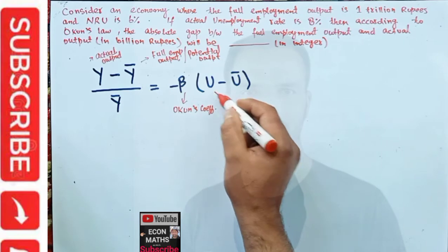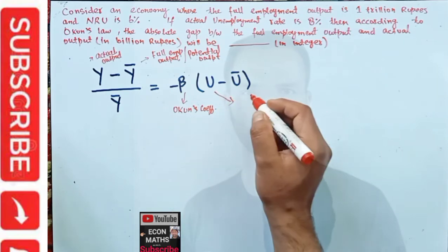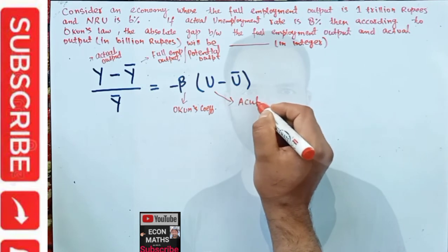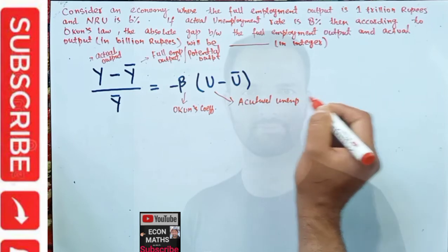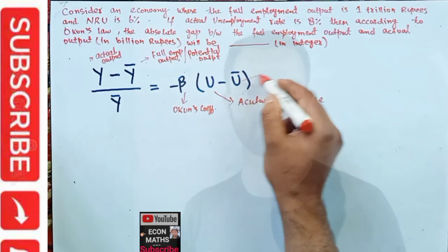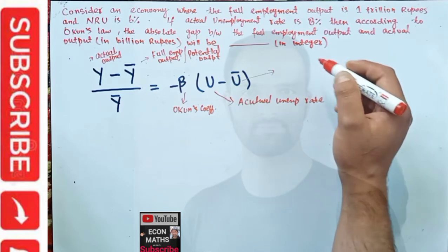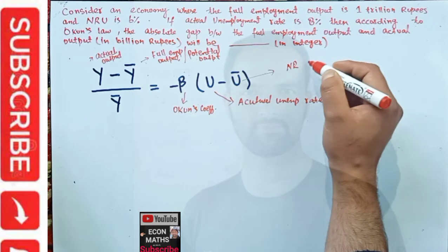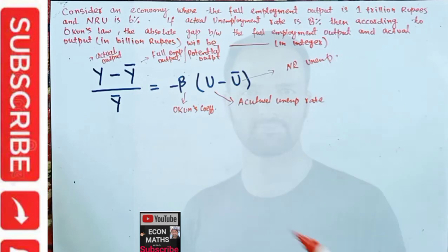'u' denotes our actual unemployment rate, and 'u-bar' denotes our natural rate of unemployment.